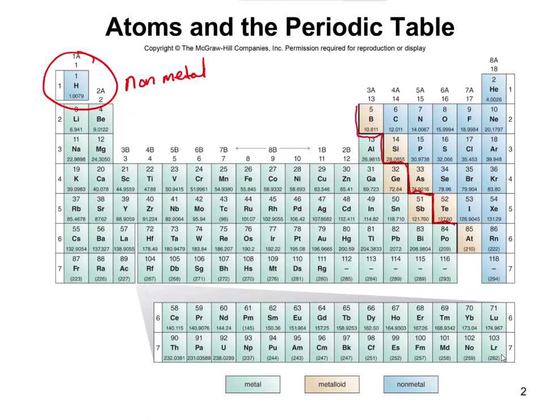So the metalloids are the ones that kind of touch that staircase. That's going to be boron, silicon, and all the other ones kind of going down there. Those are the two that we're going to see the most, boron, which is B, and Si, which is silicon. We're really not going to talk too much about those. However, that's kind of where you get the distinction between the metals and the nonmetals. Anything to the left of that staircase is going to be a metal. Anything to the right is going to be a nonmetal.